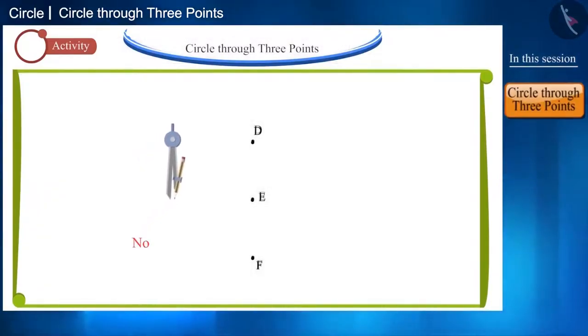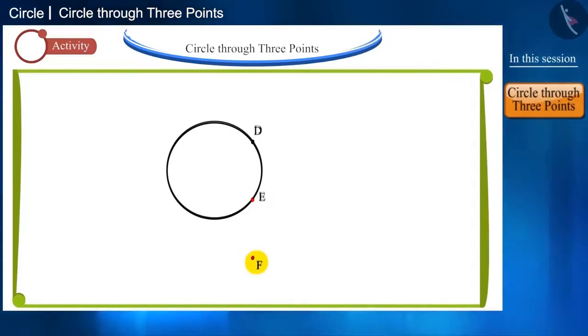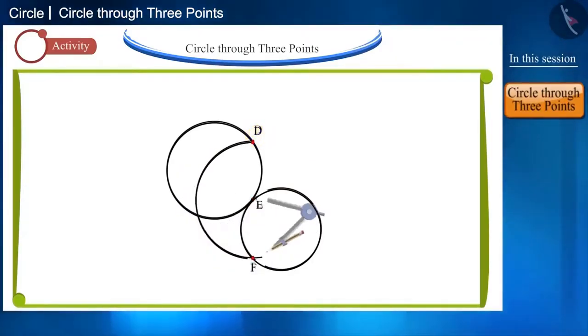No, because if we draw circles passing through points D and E, then point F is getting left out. If we draw a circle with E and F, then point D is getting left out. And if we take points D and F, then point E comes in the middle of the circle.